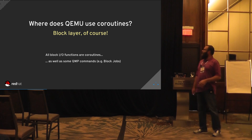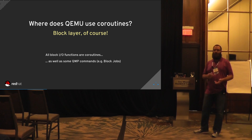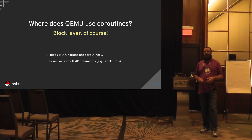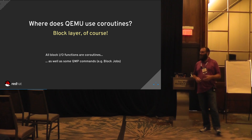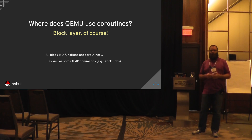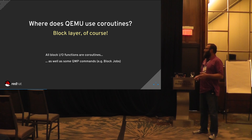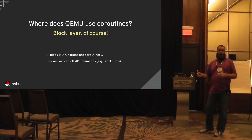All the block IO functions are more or less coroutines — reads, writes, flushes. That switchover happened a few years ago. We also have some QMP commands implemented as coroutines: long-running tasks like block commit, mirror, or other block jobs. Since they take a long time to run, they're implemented as coroutines that can even be paused and resumed by QMP command.